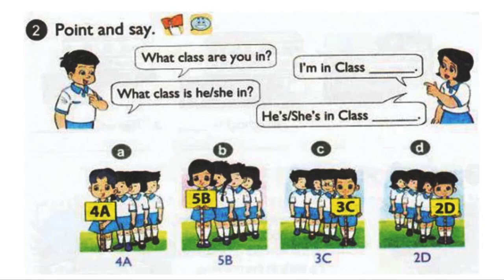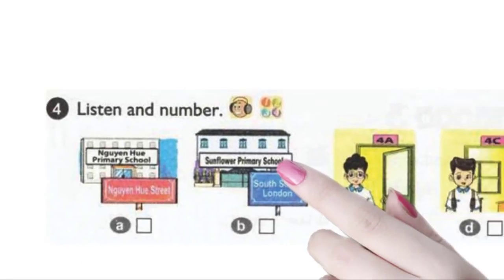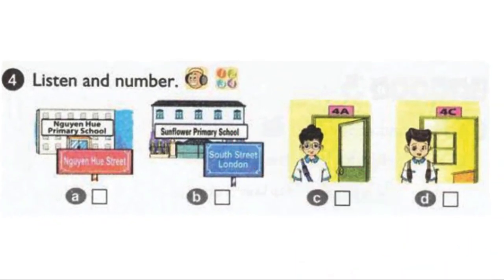Page 43. Activity 4. Listen and repeat. Number 1. Where's your school, Linda? It's in South Street, London. What's the name of your school? It's Sunflower Primary School.